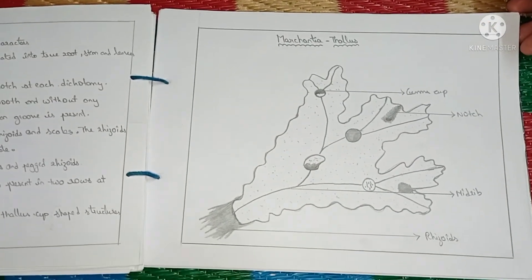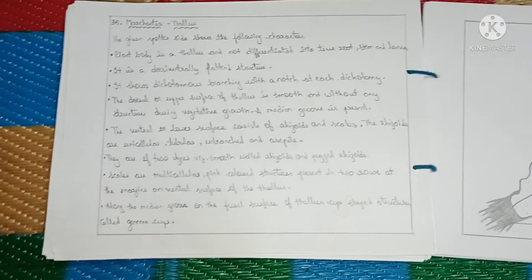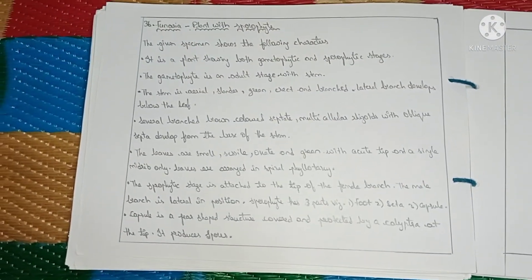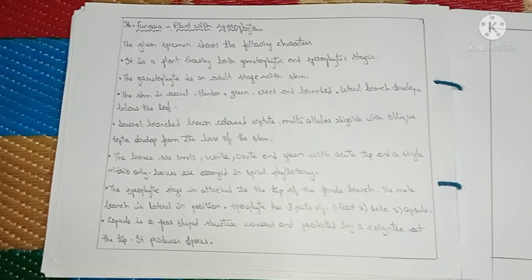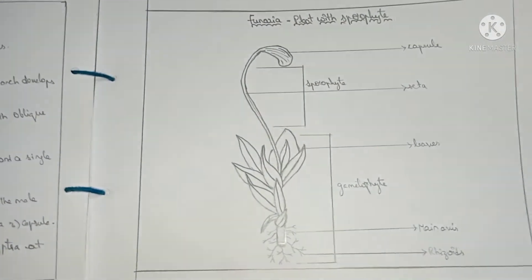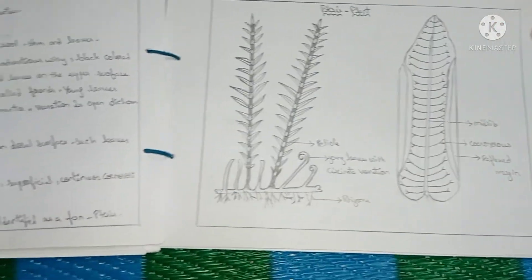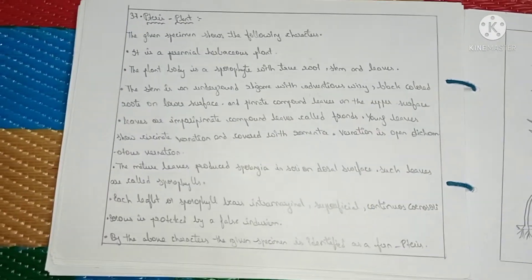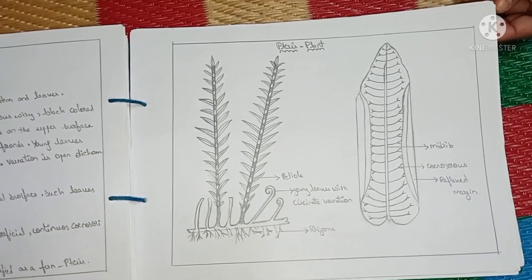Bryophytes and pteridophytes covered include: diagram of Marchantia thallus and details of Marchantia thallus, details and diagram of Funaria plant with sporophyte, and details and diagram of pteris (fern) plant.